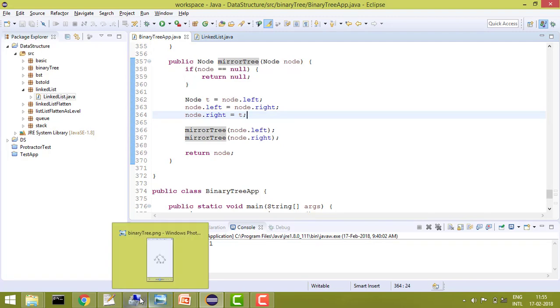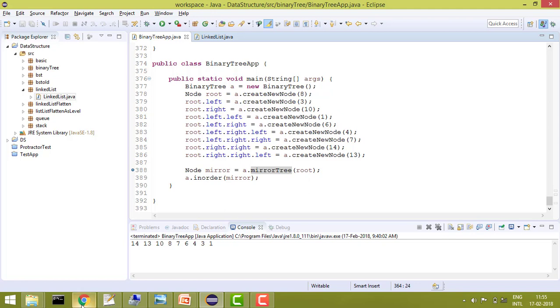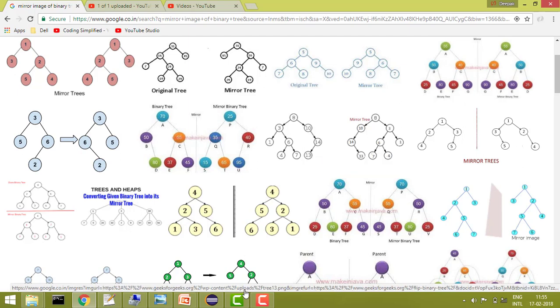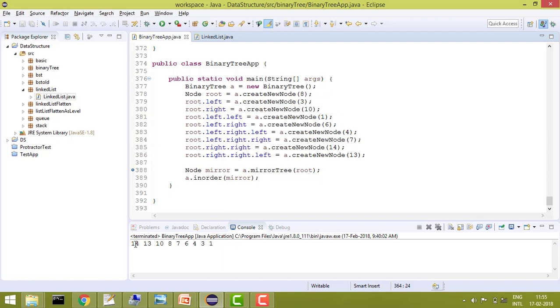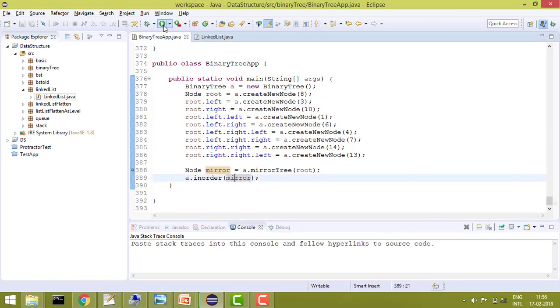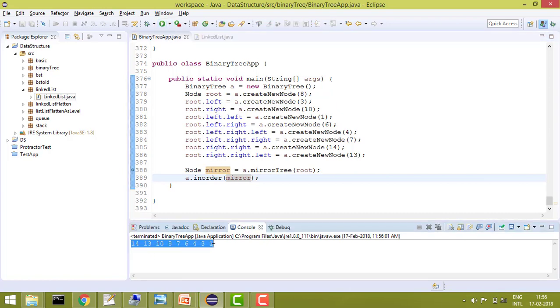If you check this one, at the last we are printing in-order. Basically if you see this node, how it will print the in-order is first 14, then 10, 14, 13, 10, 8, and then 7, 6, 6, 4, 3, 1. So if you see the code, you can see that we need to print this one. Let us run the program and you will see that it has printed the in-order in the same manner, which is the mirror tree.